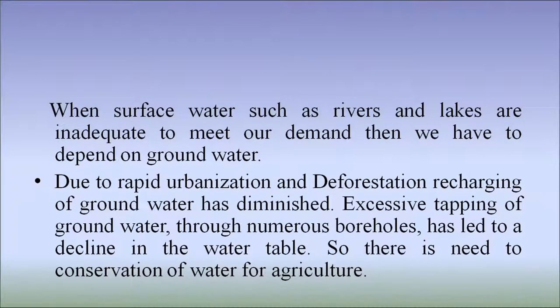Water is one of the most poorly managed resources. Chirapunji in northeast India was once the wettest place on earth. It was full of dense forest which formed rain clouds. Because of the indiscriminate cutting down of the forest, the topsoil is washed away by the rain and the area has become barren. As a result, villagers in Chirapunji have to get water from elsewhere. When surface water such as rivers and lakes are inadequate to meet our demand, then we have to depend on groundwater.